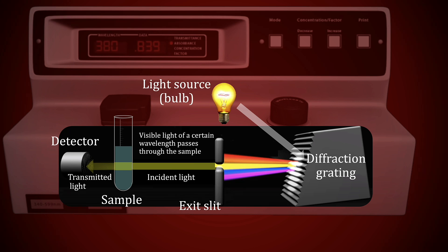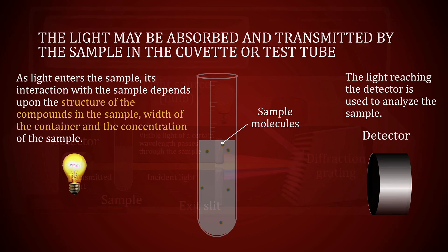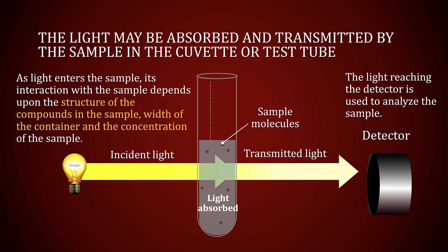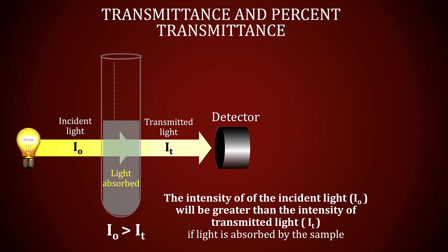When the light passes through the sample, it reaches the detector to be analyzed. As the light enters the sample, the incident light may be absorbed by the sample. The absorption of the light depends upon the structure of the sample molecules, the width of the container, and the concentration of the solution. If any light is absorbed, the intensity will change.